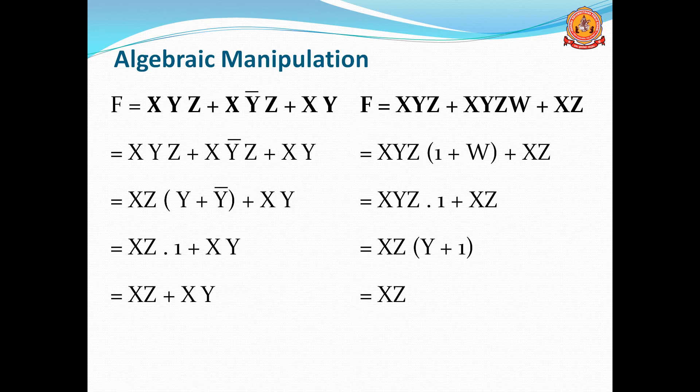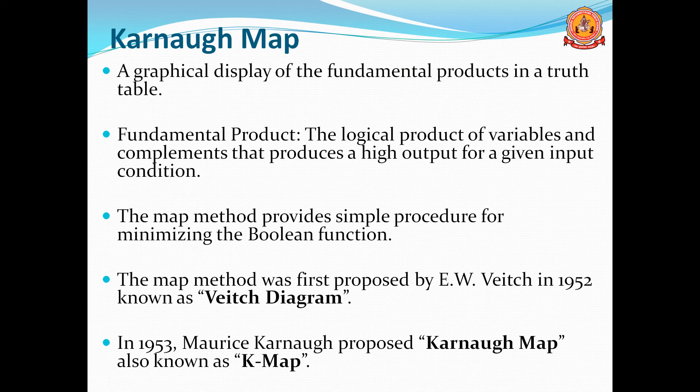In algebraic manipulation, we apply whichever applicable laws or theorems to reduce the Boolean expression. This is actually the toughest method because you have to remember all the laws. The second method is the Karnaugh map, which is a graphical display of the fundamental products in a truth table.